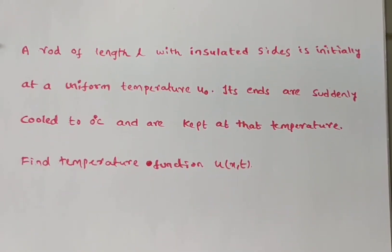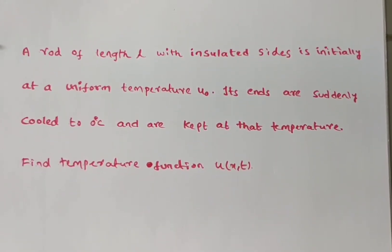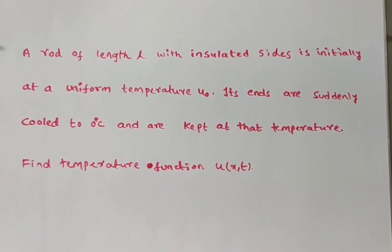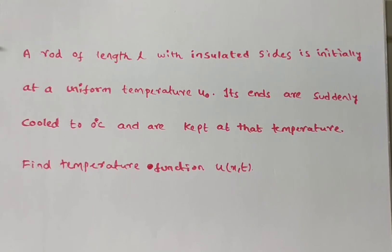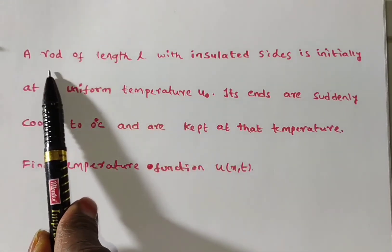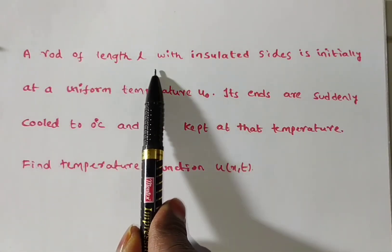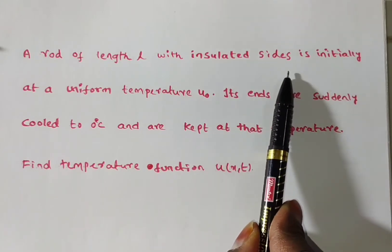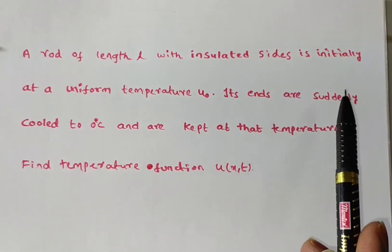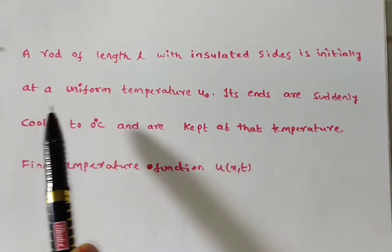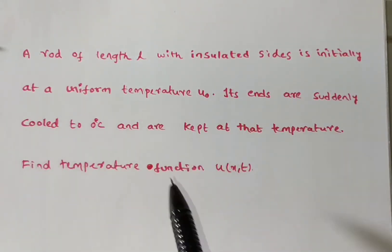Hi friends. In this video, we are solving one of the applications of the one-dimensional heat equation. The given problem is: a rod of length L with insulated sides is initially at uniform temperature U₀.